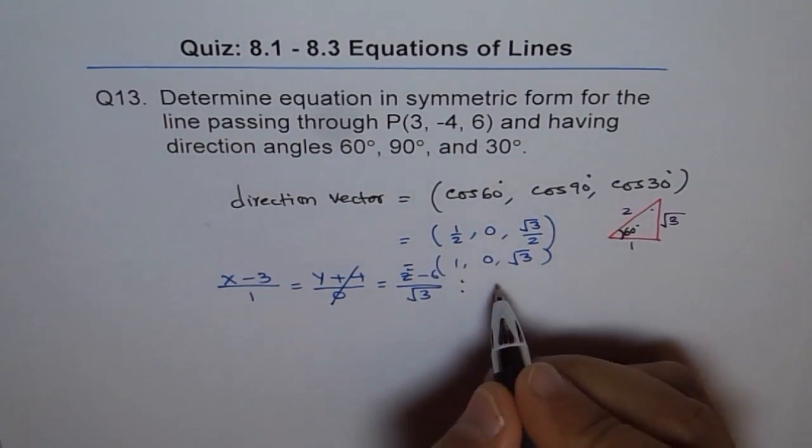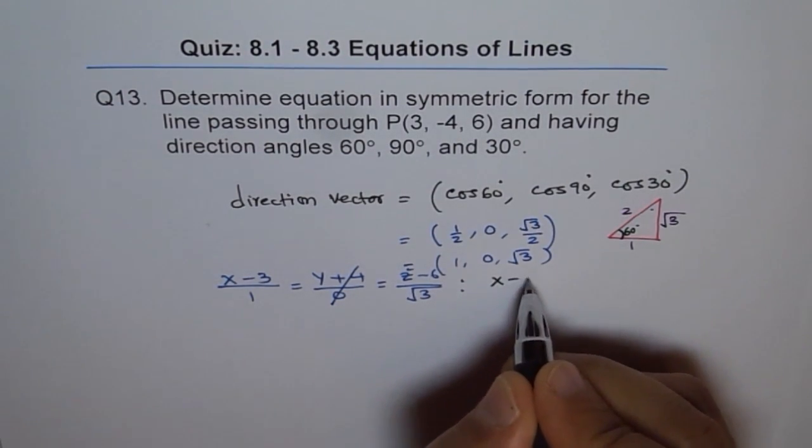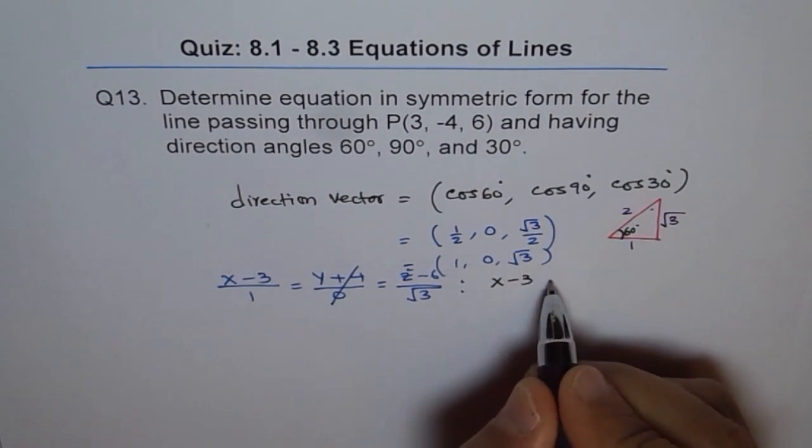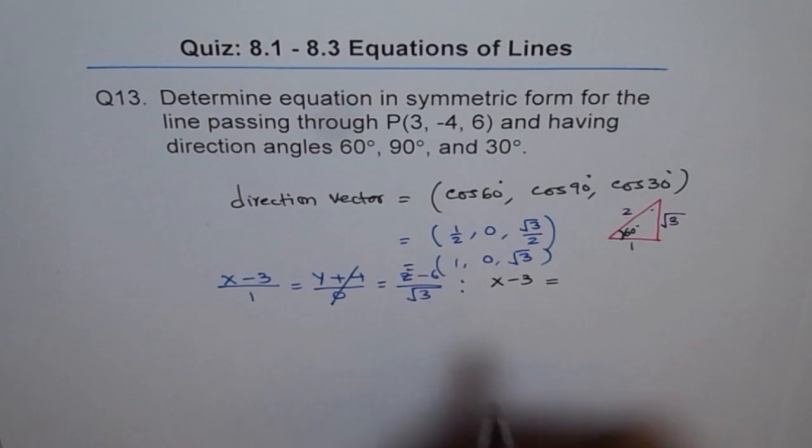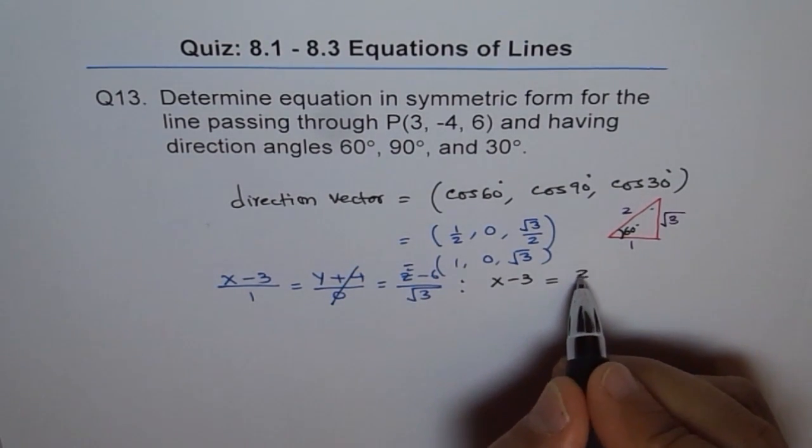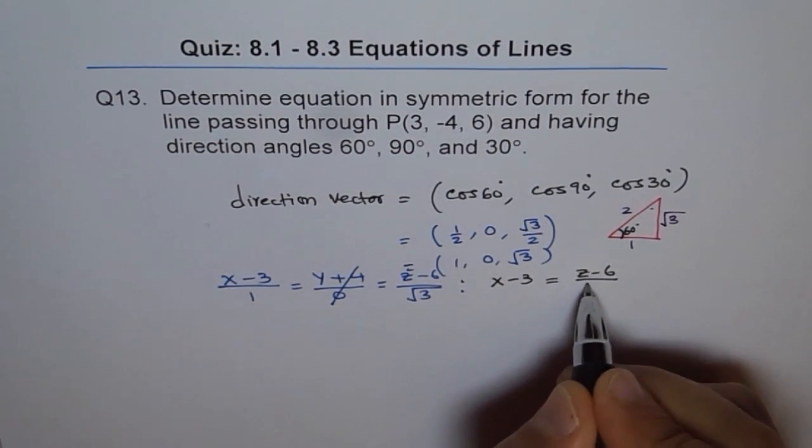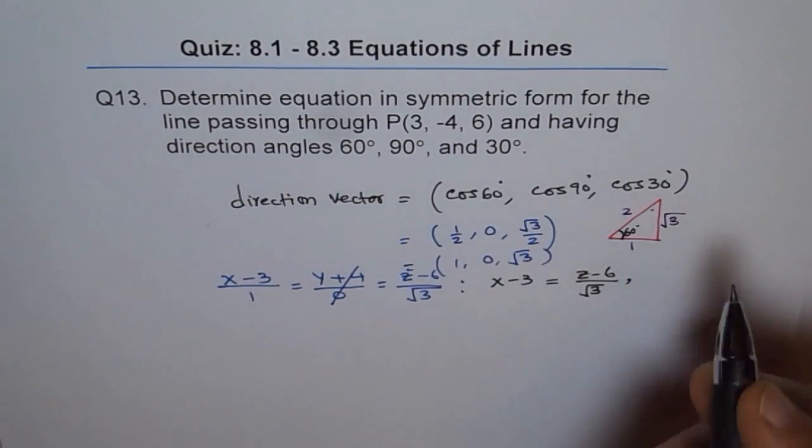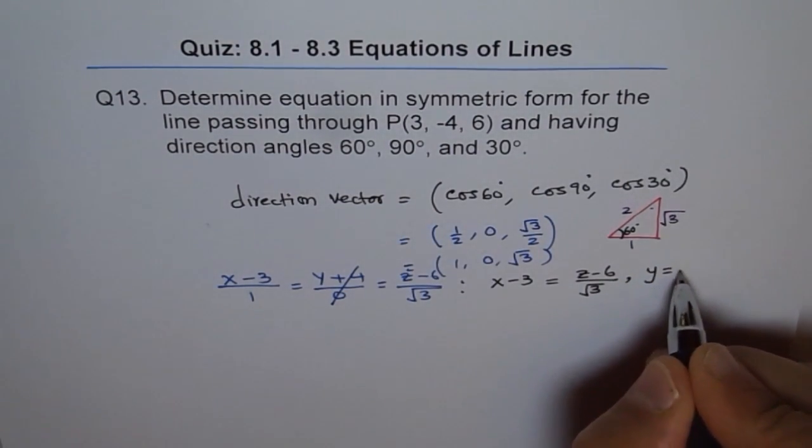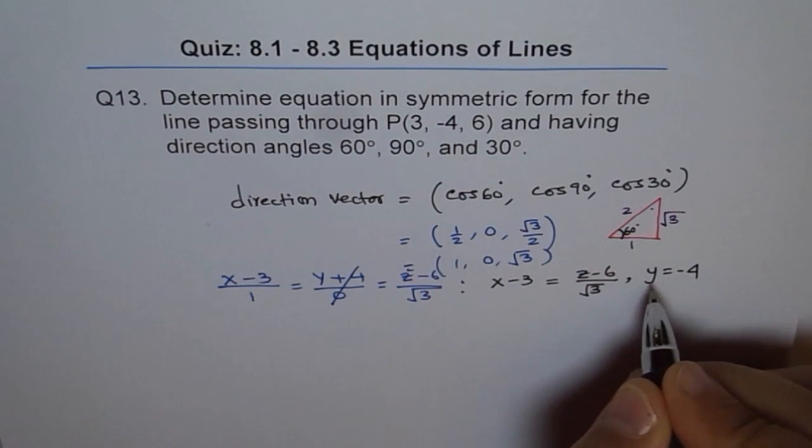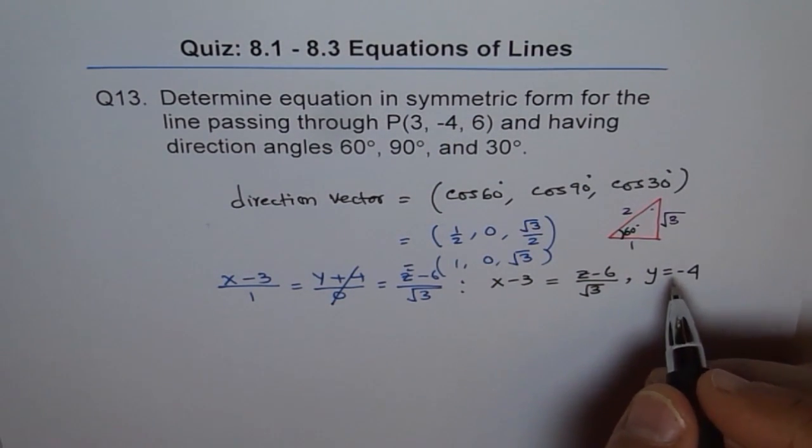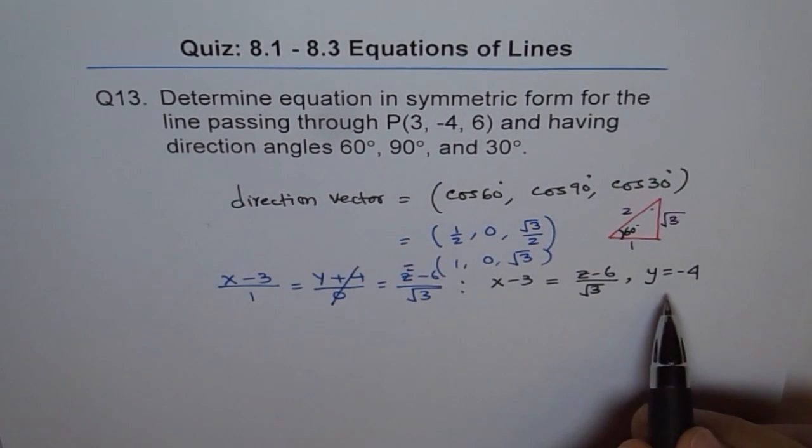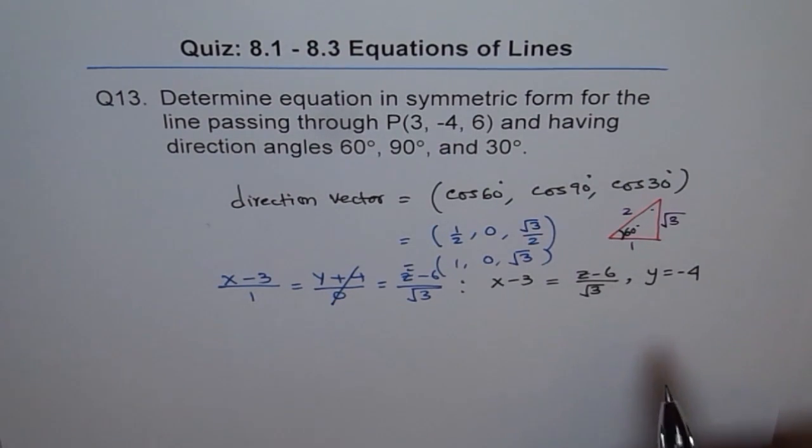Therefore, we will write our answer as x minus 3, just x minus 3. There is no need to write divide by 1. And we will skip this and we will write z minus 6 over square root of 3, comma, and y, the y value is always -4. So we will say y equals to minus 4. It is kind of a vertical line. So that is your symmetric equation for the given condition.